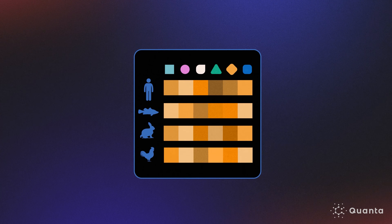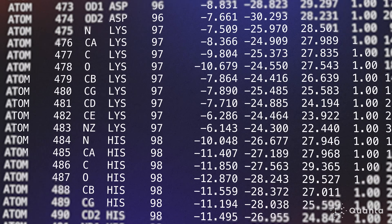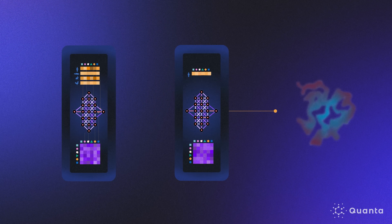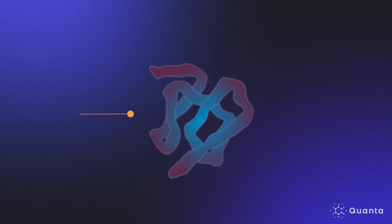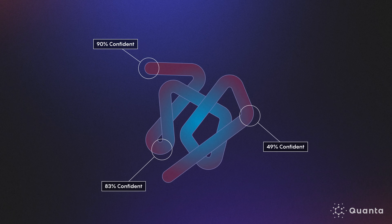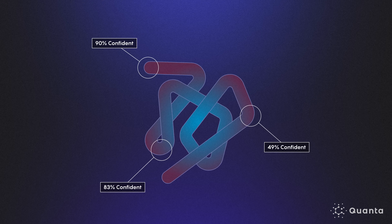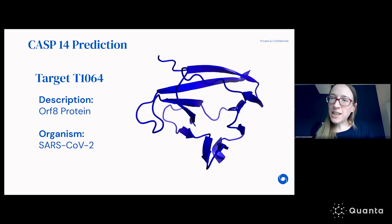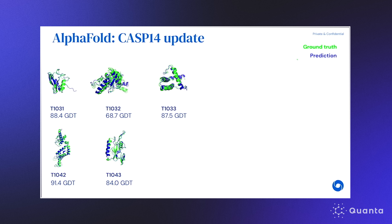They built some understanding of proteins into the system — what's called inductive bias in the language of machine learning — and it learned extraordinarily rapidly from data. The data is processed by a series of powerful neural networks called transformers. After cycling through the whole algorithm, AlphaFold reveals a structure prediction along with a confidence score. In 2020, the DeepMind team entered AlphaFold in CASP 14, and the algorithm's structure predictions came out on top. It was really a shock — can it really be that good?